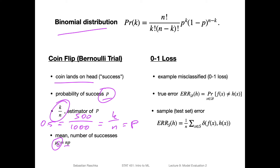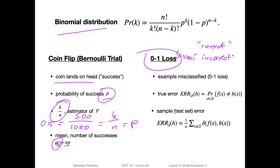How does this relate to machine learning? You can actually think of the 0-1 loss as a Bernoulli trial, because in the 0-1 loss we also have two possibilities: correct classification and incorrect. You can think of incorrect as the success here — since we are talking about error — and correct as the failure.